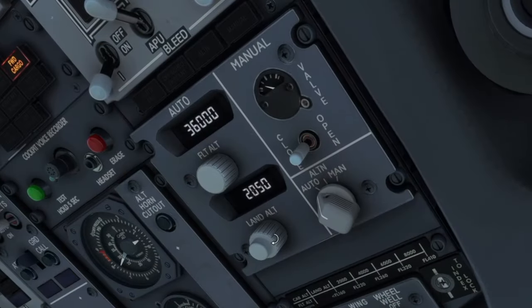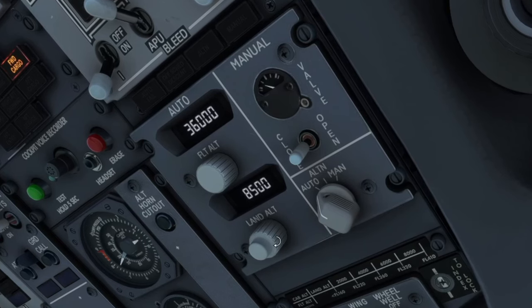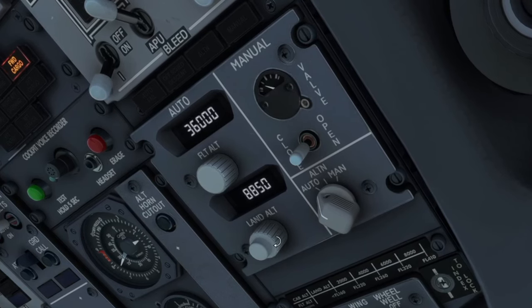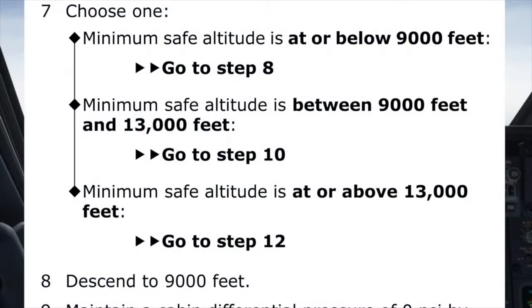Step seven also has several paths depending on what altitude our minimum safe altitude is at. Ours is at or below 9,000 feet, so we choose the first option.